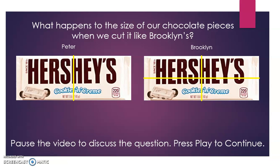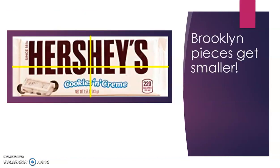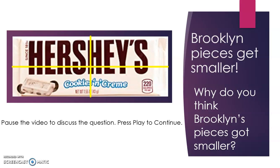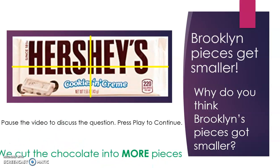What happens to the size of our chocolate pieces when we cut it like Brooklyn's? Pause and discuss, then press play. Brooklyn's pieces get smaller. But why does that happen? It's because we cut the chocolate into more pieces — we have more parts, but each part is smaller. The piece of chocolate is the same size, so if you cut it into more equal parts, the parts will be smaller.